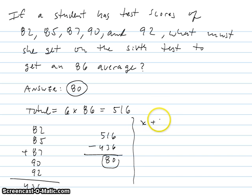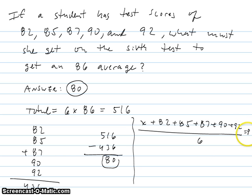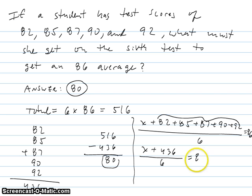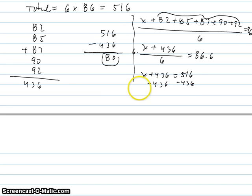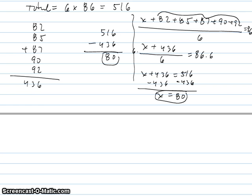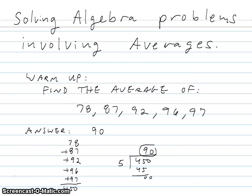If your teacher requires the algebraic method, you would write: (x + 436) / 6 = 86. Multiply both sides by 6 to get x + 436 = 516. Subtract 436 from both sides to get x = 80. That concludes the lesson on how to solve algebra problems involving averages. I hope you learned a lot — have a good rest of your day.